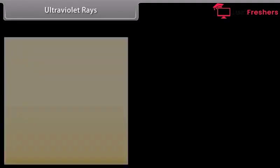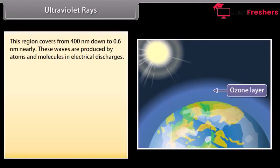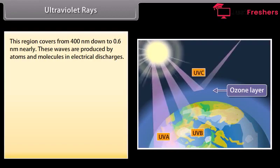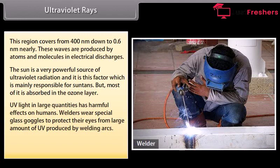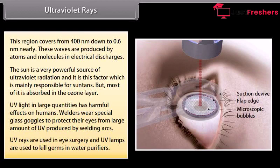Ultraviolet rays cover from 400 nm down to 0.6 nm. These waves are produced by atoms and molecules in electrical discharges. The sun is a very powerful source of ultraviolet radiation, and it is mainly responsible for sunburn, but most UV is absorbed in the ozone layer. UV light in large quantities has harmful effects on humans. Welders wear special glass goggles to protect their eyes from large amounts of UV produced by welding arcs. UV rays are used in eye surgery, and UV lamps are used to kill germs in water purifiers.